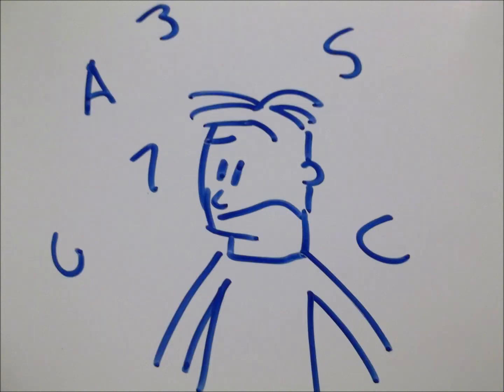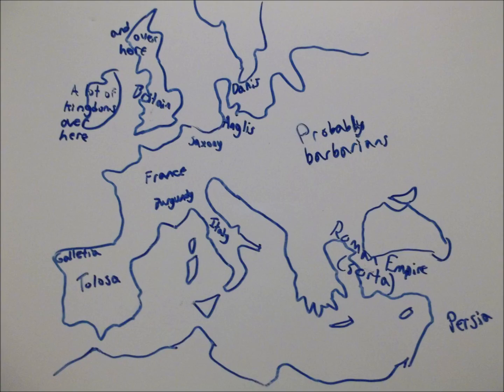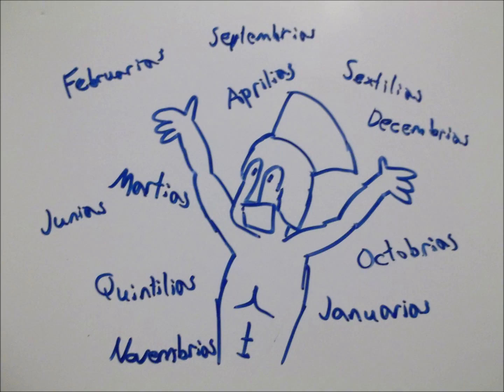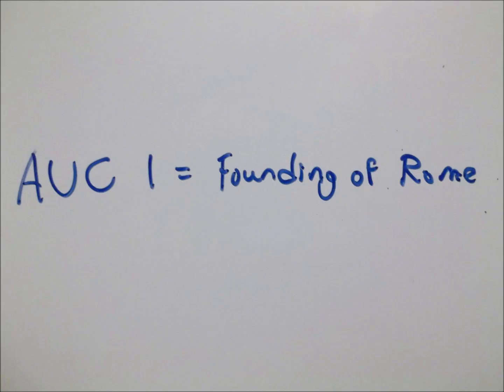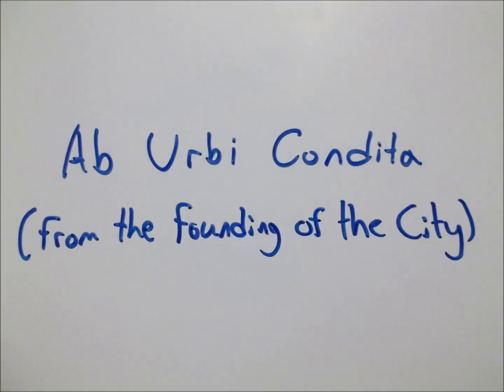All those letters and numbers probably don't mean anything to you, so let's put it in context. During Dionysius' time, the Roman Empire, while mostly broken up for various emperors to slice among themselves, was still a very real presence in the world, and thus remnants of the culture remained all throughout Europe. One of these remnants was the Roman calendar, with its year starting at AUC 1, or the year Rome was founded. Thus, AUC stands for Ab Urbi Condita, or 'the founding of the city.'